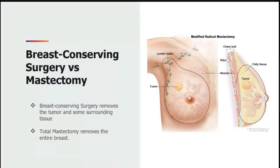A breast conserving surgery removes the cancer and leaves as much normal breast tissue as possible, while a mastectomy removes the entire breast. A lumpectomy, segmentectomy, and quadrantectomy are types of breast conserving surgeries. Total mastectomy surgeries may also remove overlying skin, cut and retract chest muscles, and remove the nipple. A modified radical mastectomy is an example of a total mastectomy which removes the entire involved breast including the axillary tail and axillary lymph nodes.